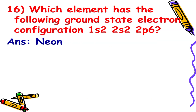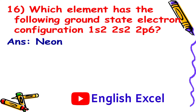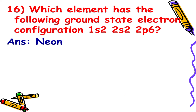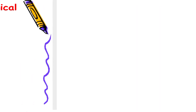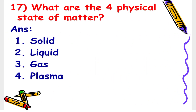Next: Which element has the following ground state electron configuration: 1s², 2s², 2p⁶? The answer is neon. Next: What are the 4 physical states of matter? The answer is: 1. solid, 2. liquid, 3. gas, and 4. plasma.